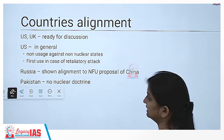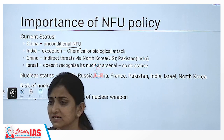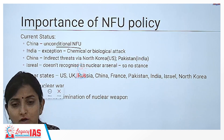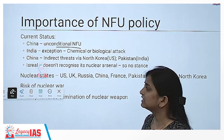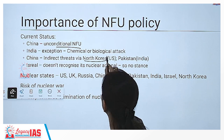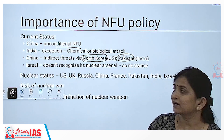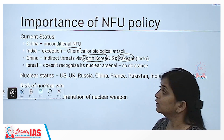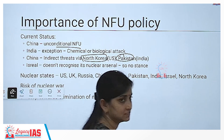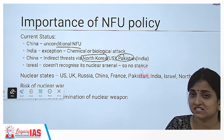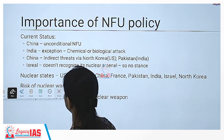China claims an unconditional NFU policy — under any condition it will not be the first country to use a nuclear weapon. However, indirectly it makes use of nuclear threats through its allies. China's allies — North Korea and Pakistan — keep warning their enemies: North Korea keeps warning the USA about attacks on Hawaiian islands, and Pakistan keeps warning India about nuclear attacks. So China can afford an unconditional NFU because it is not directly entering the war, but is asking its allies to warn its enemies about nuclear weapons.